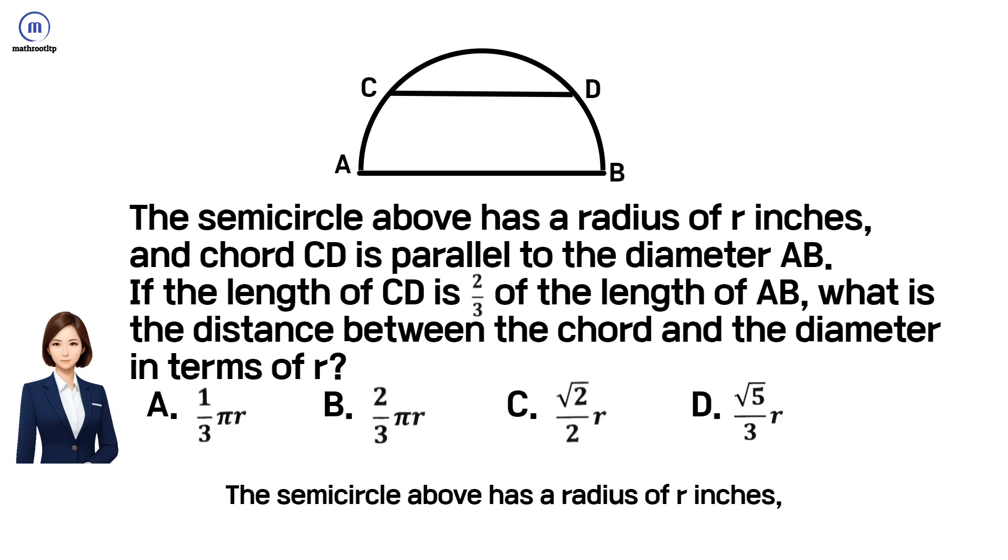The semicircle above has a radius of r inches, and chord CD is parallel to the diameter AB. If the length of CD is two-thirds of the length of AB, what is the distance between the chord and the diameter in terms of r?